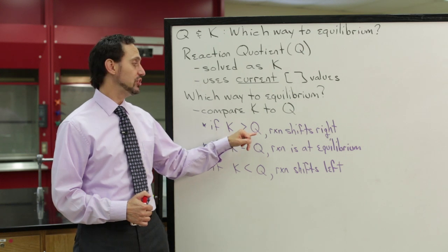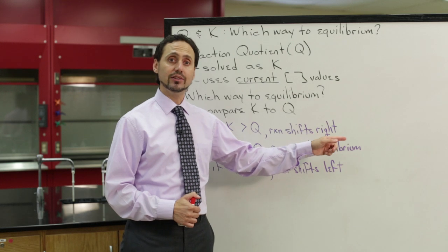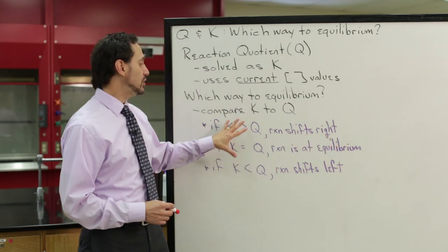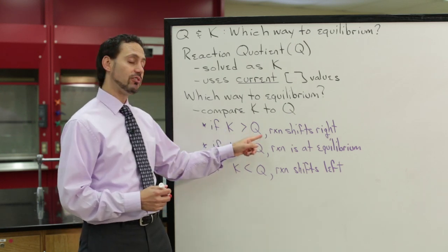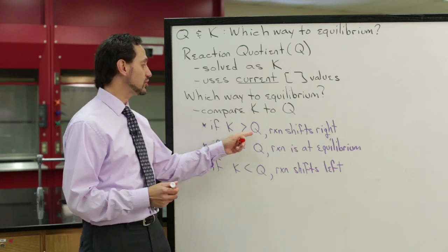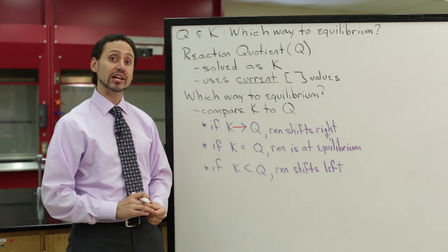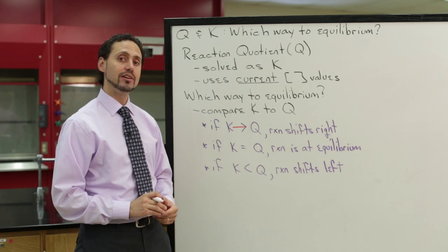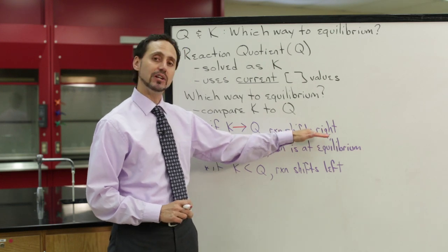If the value of K is greater than Q, the reaction will shift to the right. And if you keep this comparison in the same direction, where K alphabetically comes before Q, then you can see that K is greater than Q. It tells us that the reaction shifts to the right. Now, from a chemistry standpoint, what does that mean that the reaction is shifting to the right?